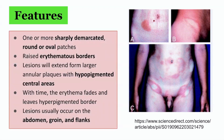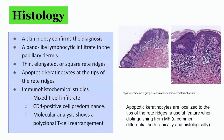Lesions usually occur on the abdomen, groin, and flank areas. The histological findings include a band-like lymphocytic infiltrate in the papillary dermis. There are thin, elongated or square rete ridges. Apoptotic keratinocytes can be found at the tips of the rete ridges.